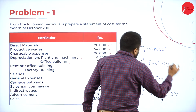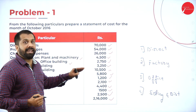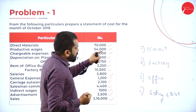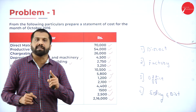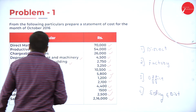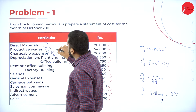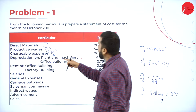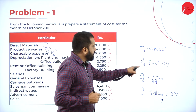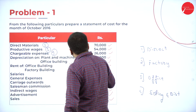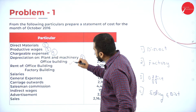Now, as per this: direct material comes under step number one. Productive wages — one. Chargeable expenses means direct expenses — one. Depreciation: plant and machinery — where do we use machineries? In the factory. So factory comes under step two. Office building — office and administration, so that is third. Rent of office building — the word 'office' comes, so it goes to office, step three. Factory building — second one, which is factory.